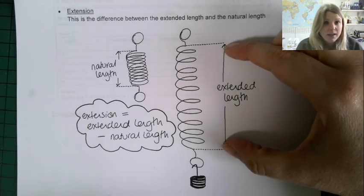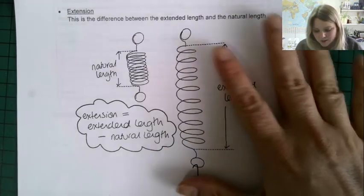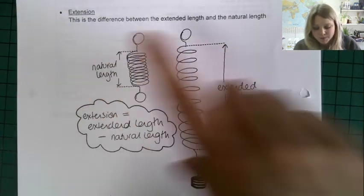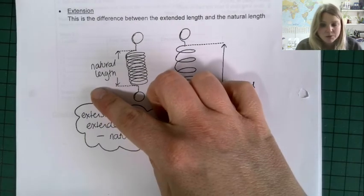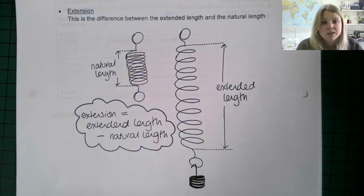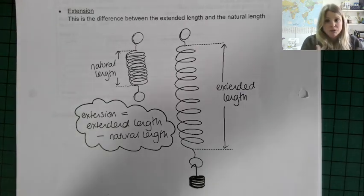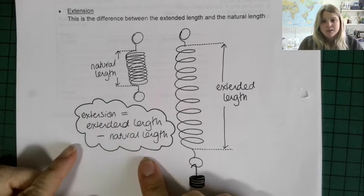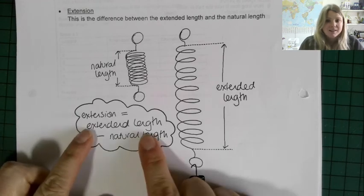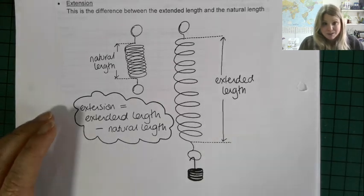The extension is just the difference between the extended length and the natural length. In questions, they'll probably give you the original length of the spring, then say that when a certain force is added the new length is such-and-such, and you'll have to figure out the extension — because it's the extension that goes into the equation. Extension equals extended length minus natural length.